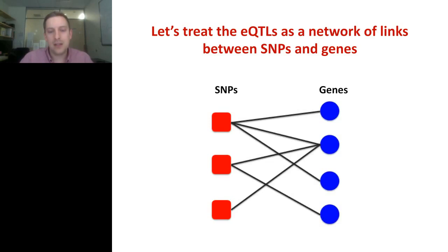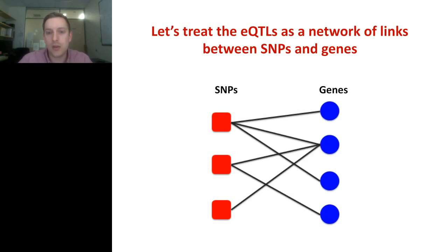As someone from a networks background, my intuition when I get data like this is to try to treat all of these eQTLs as a network of links between SNPs and genes. Specifically, this naturally forms a bipartite network — your network has two classes of nodes, SNPs and genes, and you only ever have links going between the two different classes. You don't have links between SNPs and SNPs or genes and genes. You could consider extending this by drawing links between SNPs if you have epistatic interactions, or including gene regulatory links if one of your genes is a transcription factor, but that's not work we'll consider here.